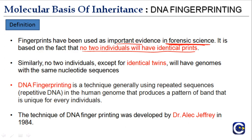No two individuals will have identical prints. Similarly, no two individuals — except for identical twins — have genomes with the same nucleotide sequence. Since we are talking about DNA, and the structural unit of DNA is the nucleotide, except for identical twins, no two individuals will have genomes with the same nucleotide sequence.